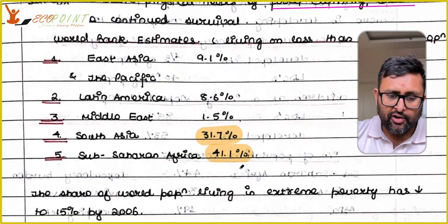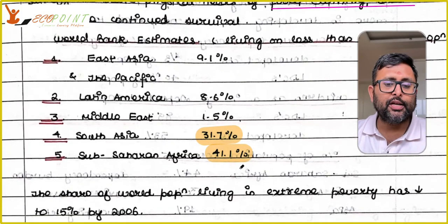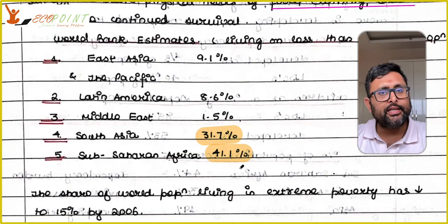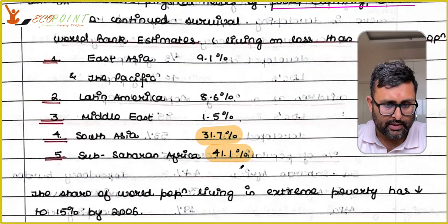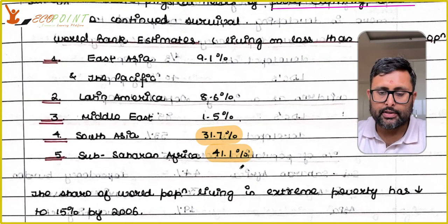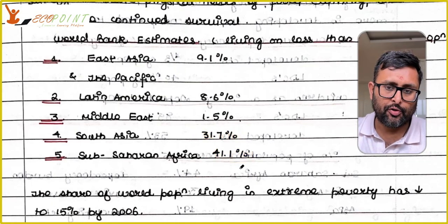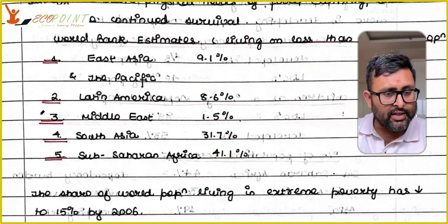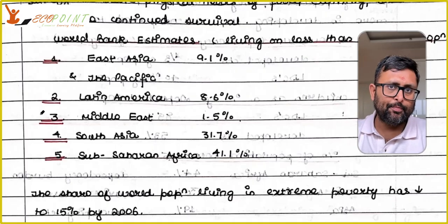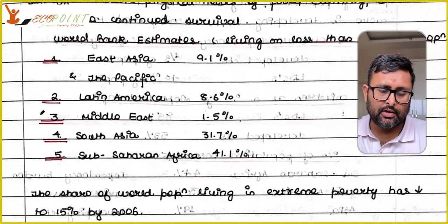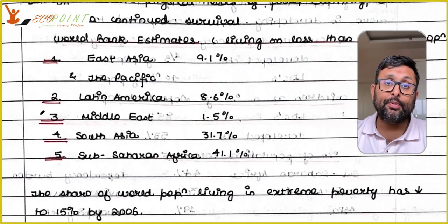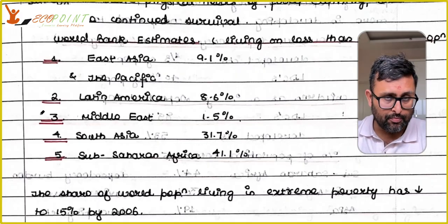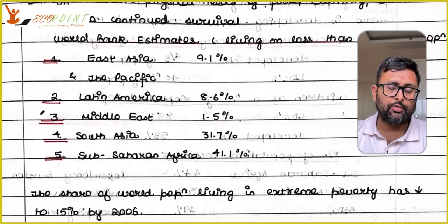The share of world population living in extreme poverty has decreased to 15% by 2006. These are the three main characteristics, and more characteristics will be covered in the coming videos. Please make notes and do the reading as well.